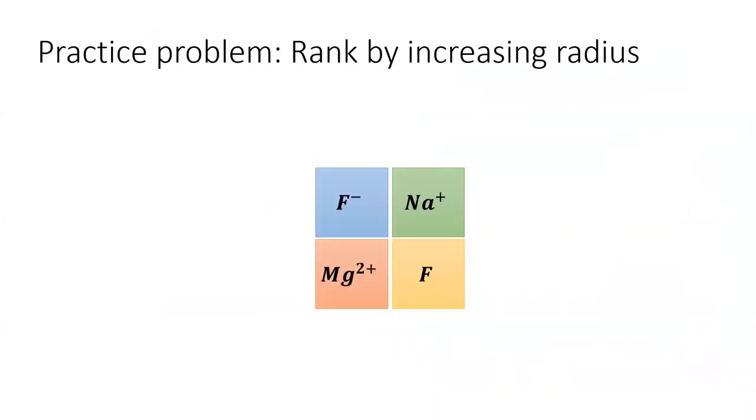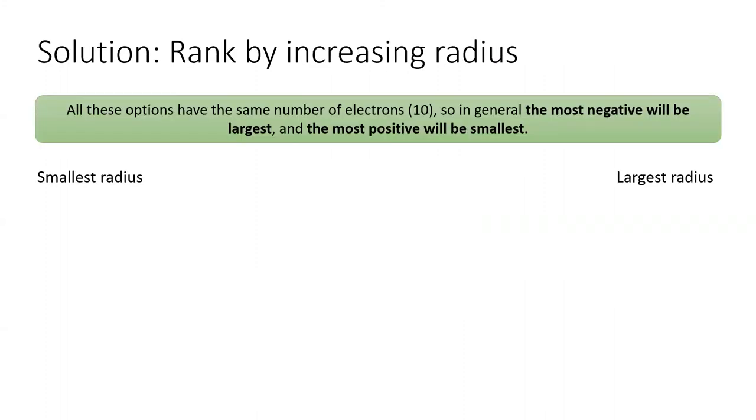Let's practice this concept. Rank these species by increasing radii. You may have noticed that all of these species are isoelectronic with neon, meaning they have 10 electrons distributed amongst the 1s, 2s, and 2p subshells.